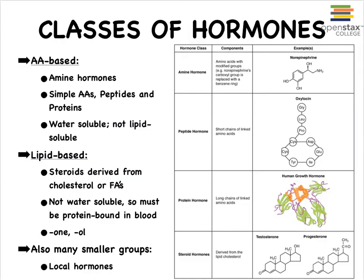There are two major groups of hormones: those that are made up of amino acids, and those that are lipids — basically steroids. Remember that steroids are one of the three types of lipids. Lipids include the triglycerides, your phospholipids, and then also the steroids. Steroids of course always have a very characteristic look to them; it's very easy to recognize their chemical structures.